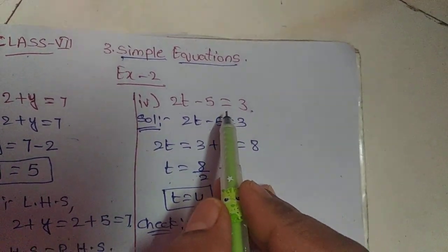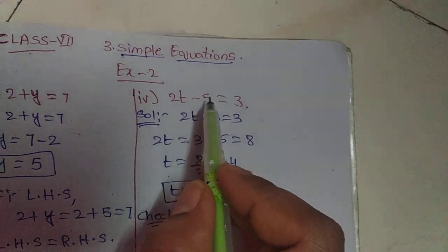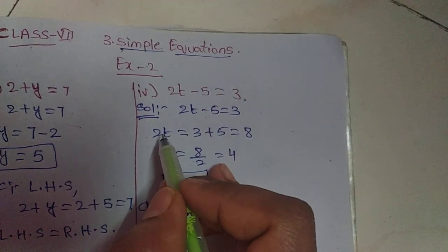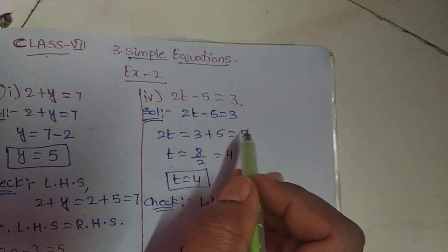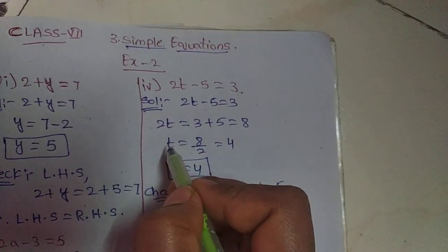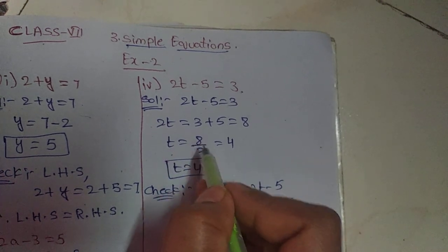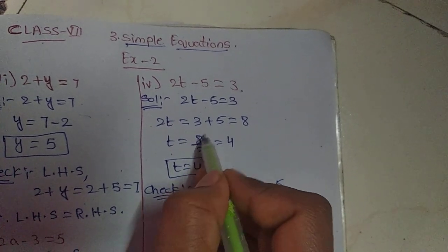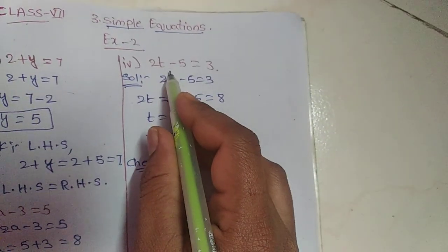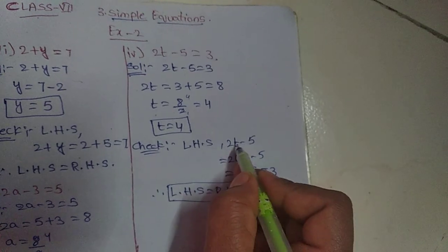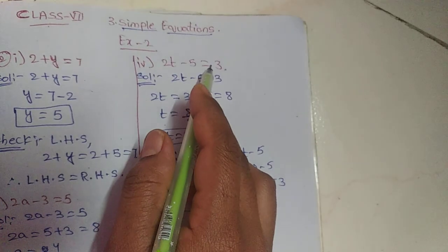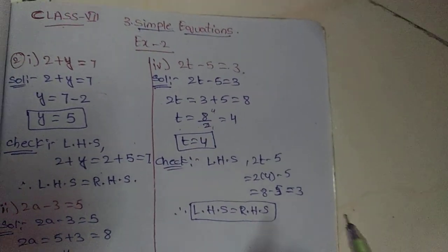Fourth one: 2T minus 5 equals 3. Transpose minus 5 to the right side as plus 5. So 2T equals 3 plus 5, which is 8. Divide both sides by 2: T equals 4. Checking: substitute T equals 4. 2 into 4 minus 5 is 8 minus 5, which is 3. So LHS equals RHS.